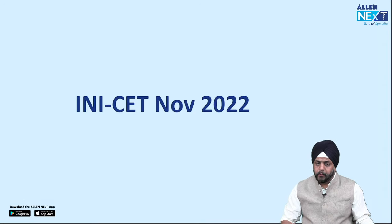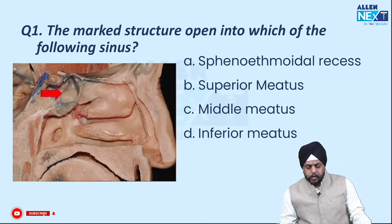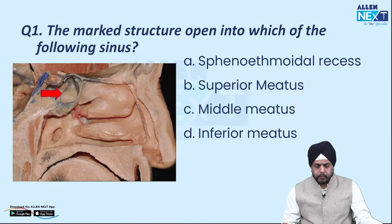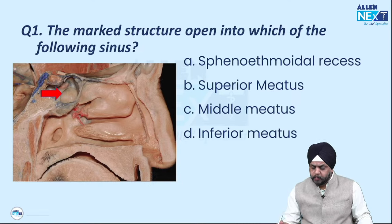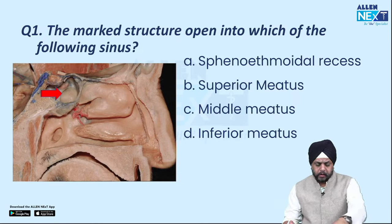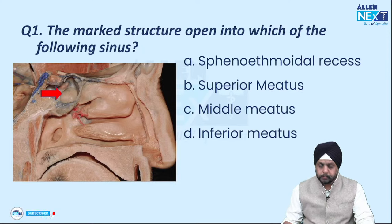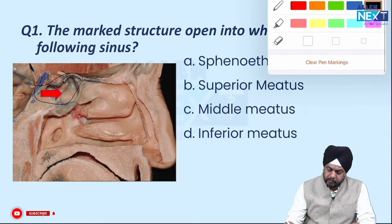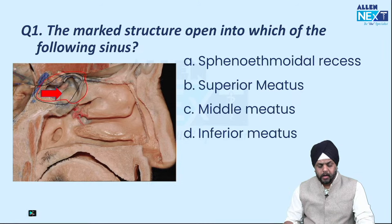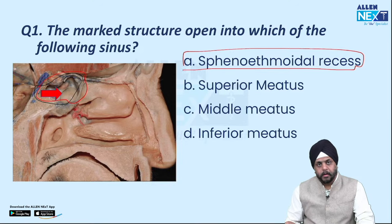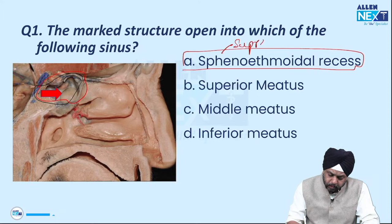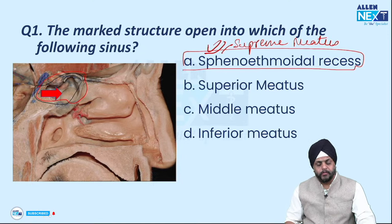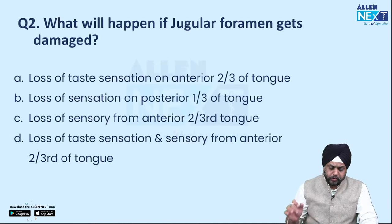Moving to the INICET November 2022 exam: the marked structure opens into which sinus? This is a straightforward cadaveric image question. Cadaveric and cross-sectional images have become a favorite of the INICET exam body. This is a coronal cross-section of the nose. The marked structure is the sphenoid sinus, and the sphenoid sinus opens into the sphenoethmoidal recess. If a supreme turbinate is present, it would be called the supreme meatus.